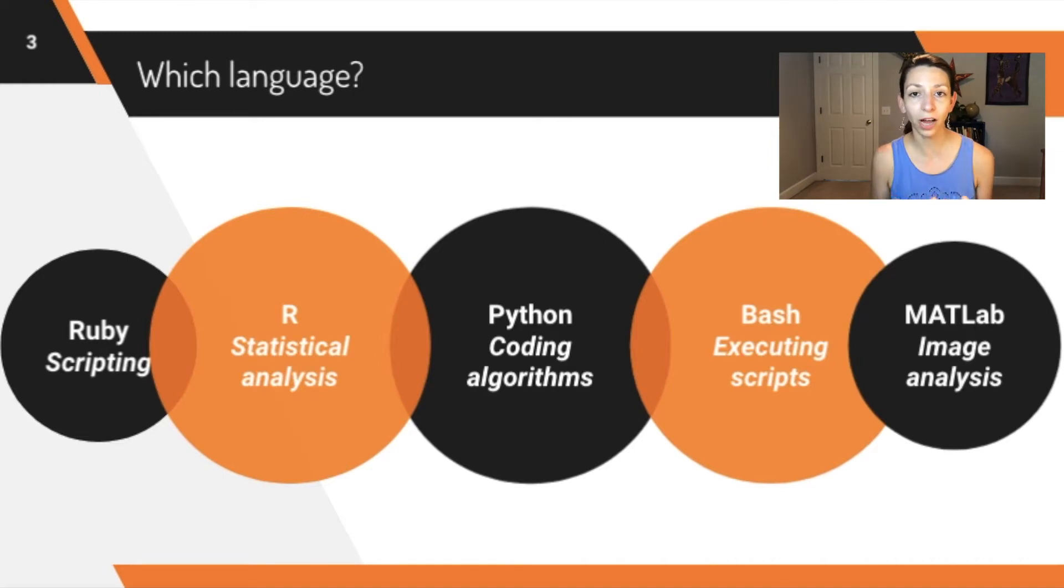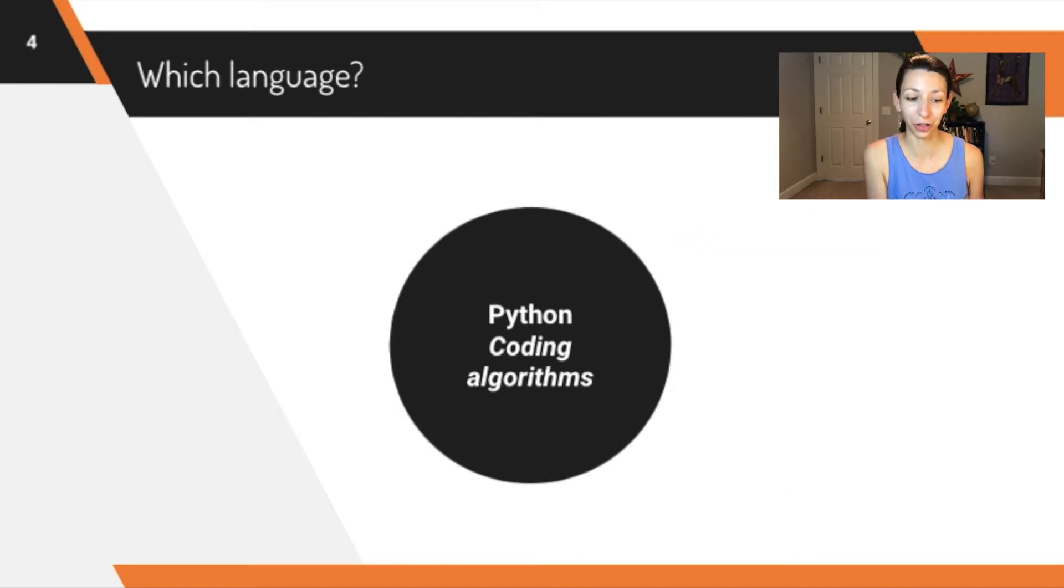If you're already in graduate school or you're thinking about going down that route, think about what kind of labs you'll be working with and tools and resources that your mentors already use. There's no one best universal programming language for biology, but I will say Python does have its advantages, especially as a first language to learn.